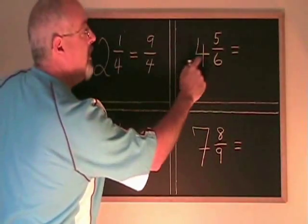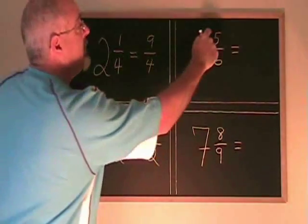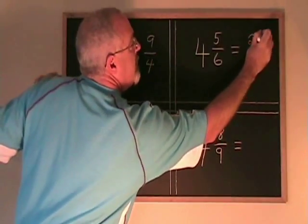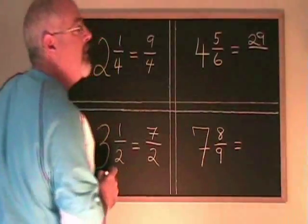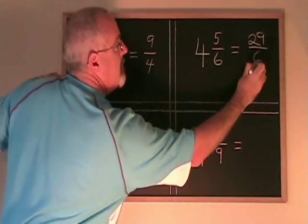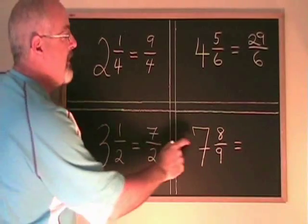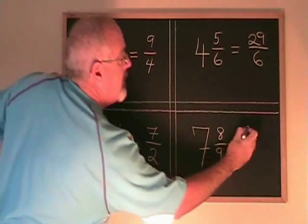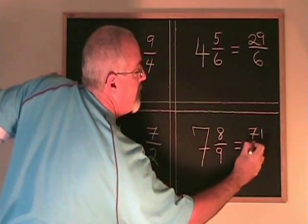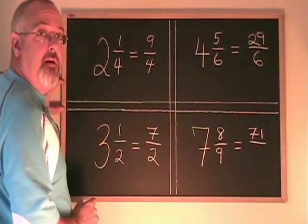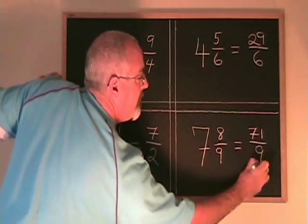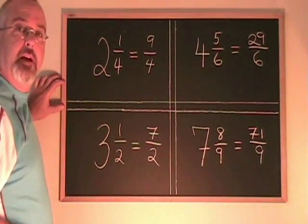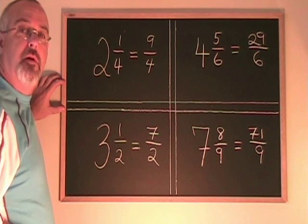4 times 6 is 24, plus 5 is 29. The denominator remains the same. 7 times 9 is 63, plus 8 is 71. The denominator remains the same. This is how you convert mixed numbers to improper fractions.